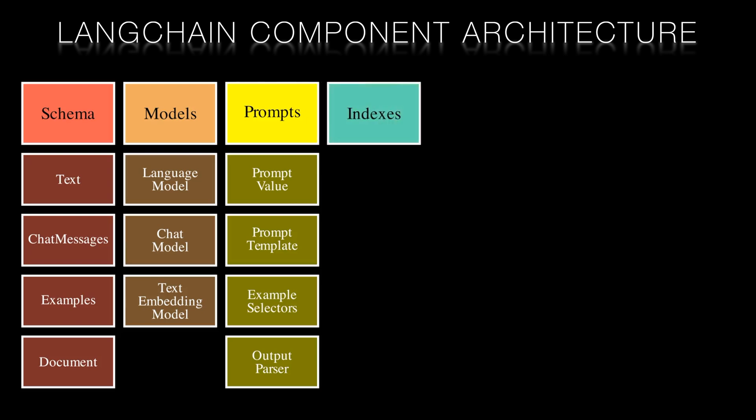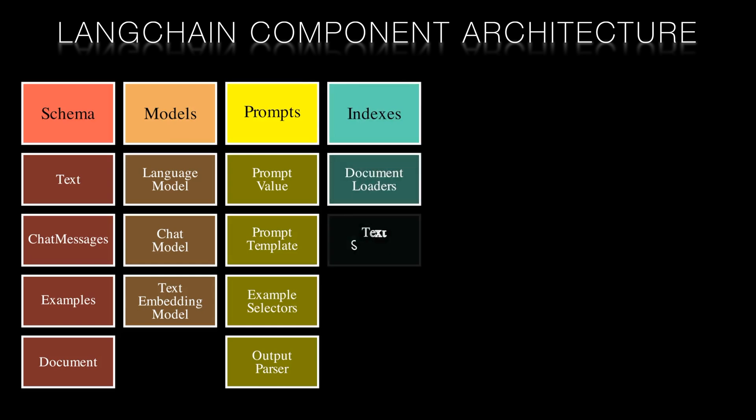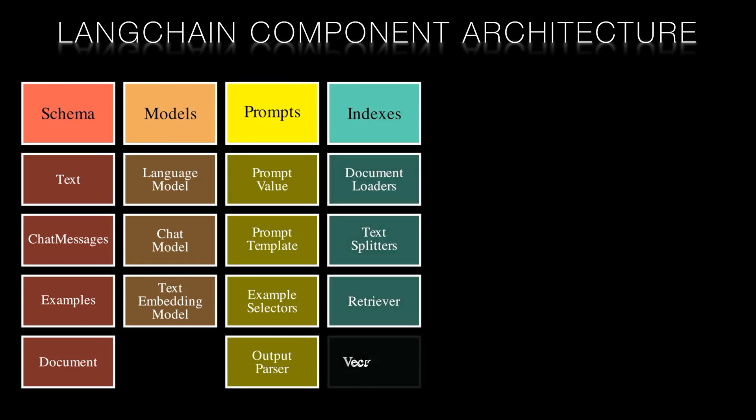Indices, or indexes, handle document management, including retrieval and vector storage. They consist of document loaders, text splitters, retrievers, and vector store. They interact with the schema to categorize and store data, and with models to retrieve and supply relevant information when needed.